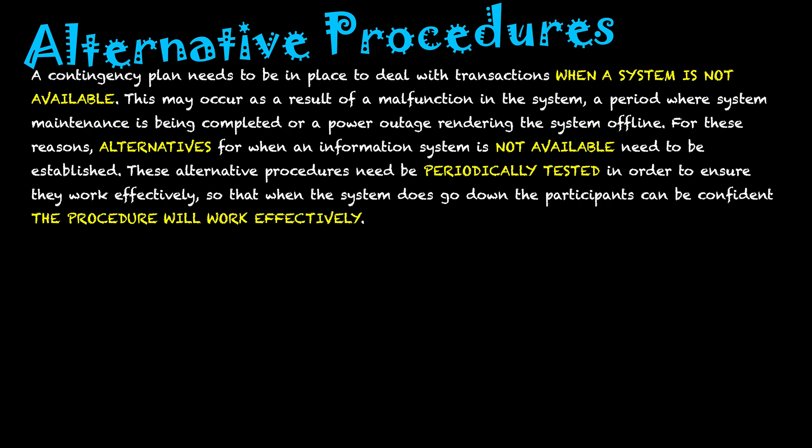For these reasons, alternatives for when the information system is not available need to be established. Basically, what are we going to do if the main system goes down? We need to have some sort of backup in place. This backup could be a paper-based system where we document the primary keys of the products we're selling and then enter them into the system when it comes back online.